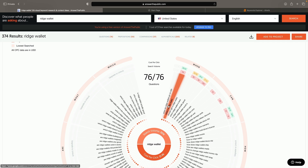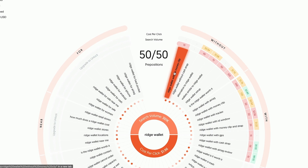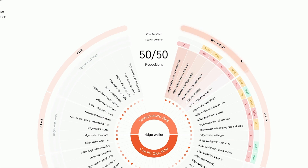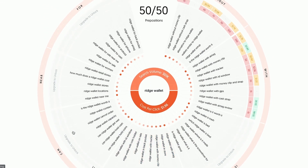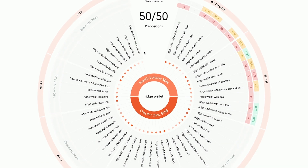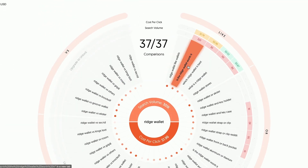Since your site should have the most authority for your brand keyword, it should be very easy to rank for all of these. The next section is prepositions — Ridge Wallet without money clip, Ridge Wallet without cash strap, alternative to Ridge Wallet. So there's without, with, is, to, can, near, and for. If these aren't redundant, you can simply go and create content for these as well.